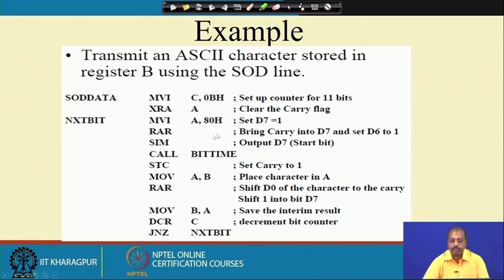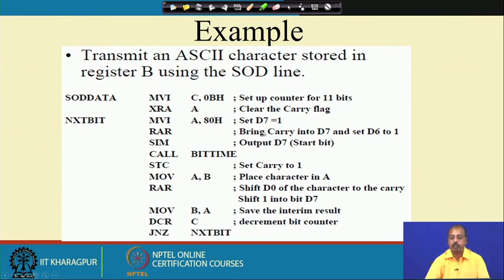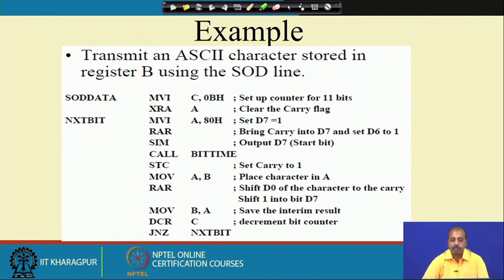Then we wait for some bit time using a delay routine. You can write a small delay routine by finding out what the bit time is for the crystal frequency connected to the 8085 processor, and then determine the baud rate setting between the device and the processor. Based on that you can find out what the bit time is and put a delay routine equivalent to that bit time delay.